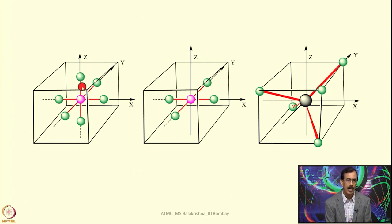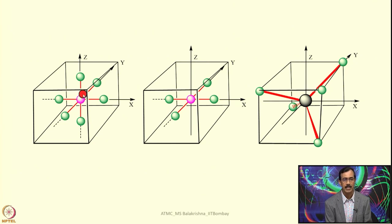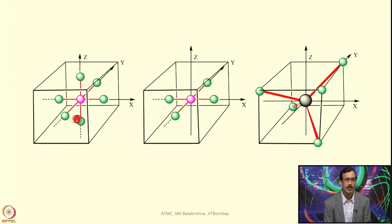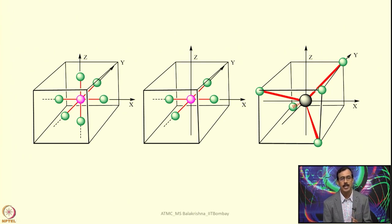If we look into the direction of approach of ligands, it is easy to understand how these ligands interact with the 5 d orbitals. In the case of octahedral complexes, the 6 ligands interact with the 2 orbitals in their path — d z² and d x²-y² — whereas the other 3 orbitals, d xy, d yz, and d zx, are between the axes and have much lesser interactions. This is where the splitting of d orbitals into e_g and t_2g comes into the picture, with t_2g having slightly lower energy and e_g having higher energy.